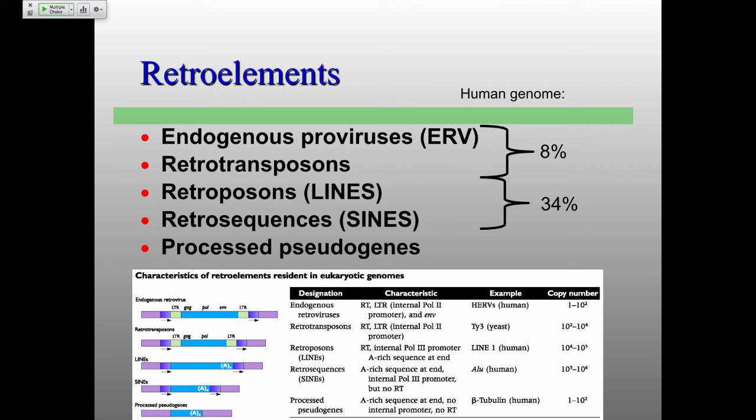Everyone's going to get this right: why are only complete genomes packaged in retroviruses? The answer is the packaging site is between the splice sites. Also, a really cool and kind of frightening story — koalas in Australia are actually endogenizing some retroviruses right now as we speak, picking them up into their genome and spreading through the country.